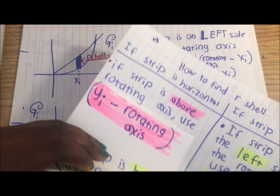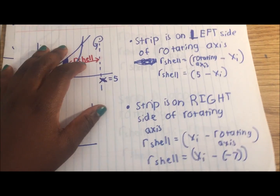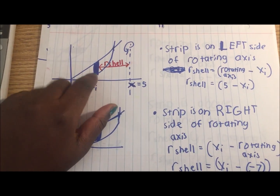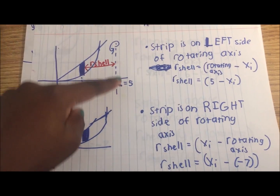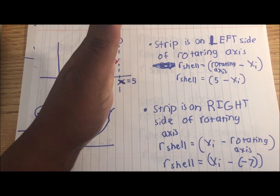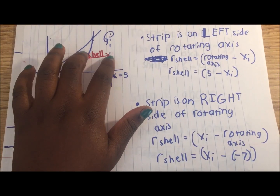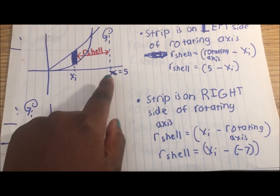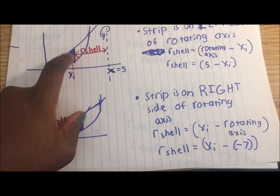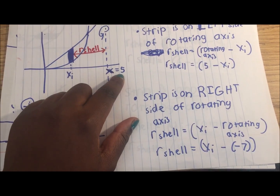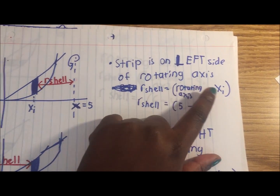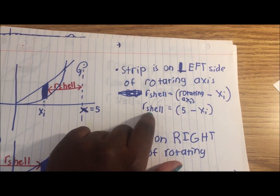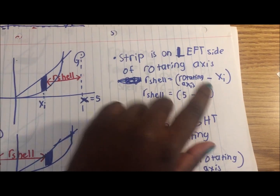Let me go through some examples. Here the strip is vertical and, as you can see, the strip is on the left side of the rotating axis — x equals something. To find r_shell, the distance between these two, we're going to do the rotating axis minus xi. Xi is the x component of the strip. So we do 5 minus xi. Since it's on the left side of the rotating axis, r_shell equals 5 minus xi.